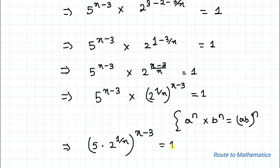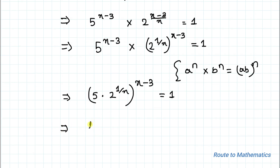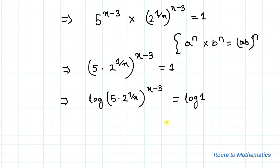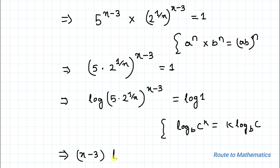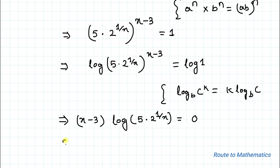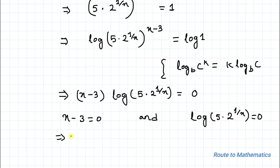In the next step we are going to apply log on both sides: log of 5 multiplied with 2 to the power 1 by x, whole to the power x minus 3, equals log 1. On the left side we apply the logarithm rule that log of b to the power k equals k times log b. Applying this rule, our equation becomes x minus 3, multiplied with log of 5 times 2 to the power 1 by x, equals 0.